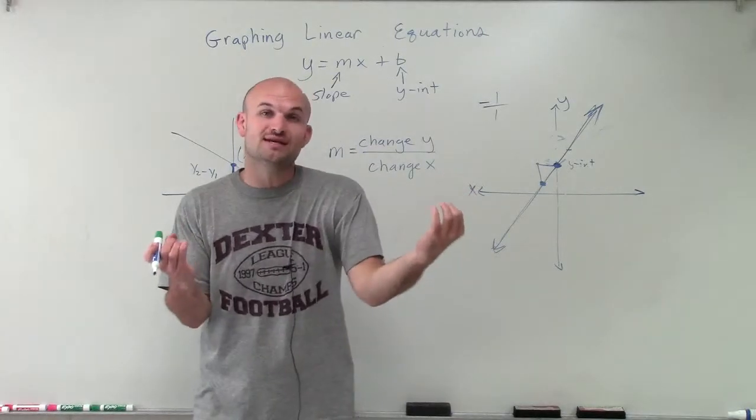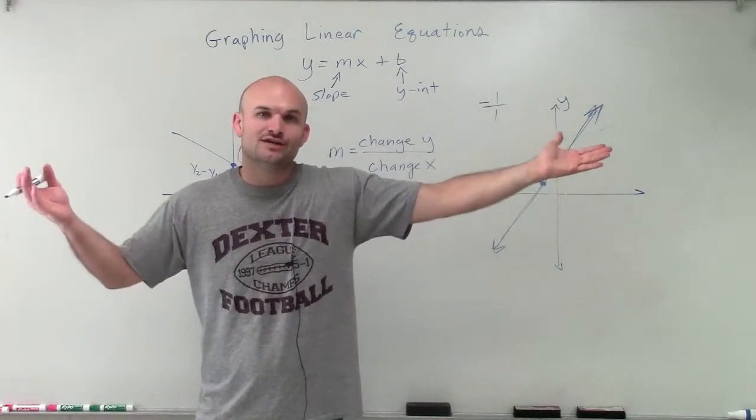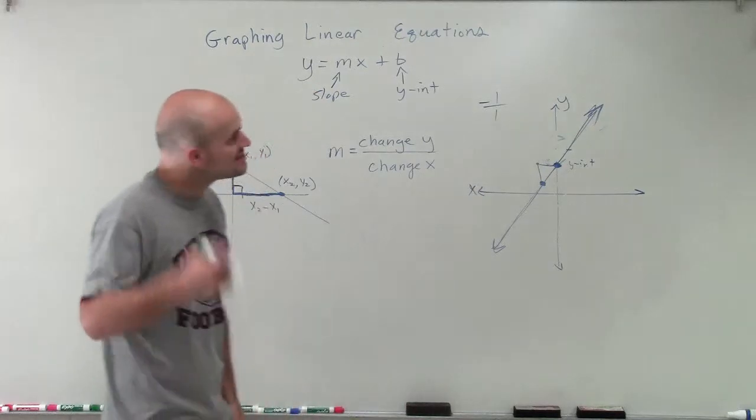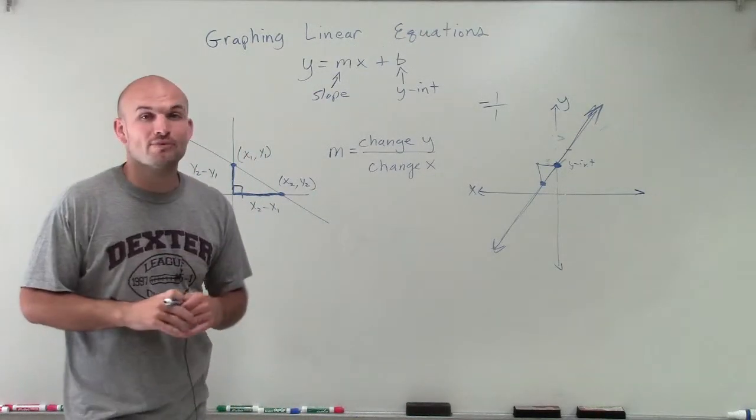Then what we're going to do is use the slope and use our triangle by finding the change in the y over the change of x to move from our y-intercept to our next point. Once we have two points that we know are on the line, we can connect them and draw a graph. That's just a brief overview on how we're going to graph using slope-intercept form.